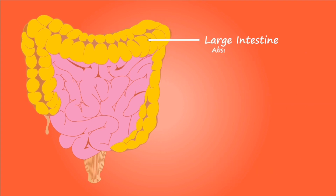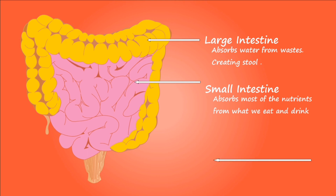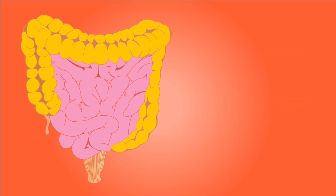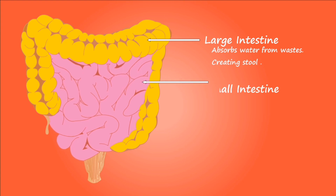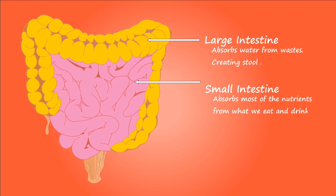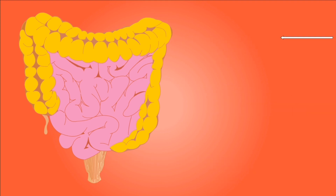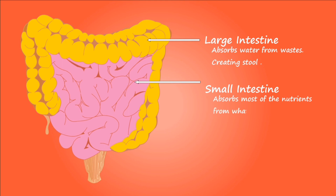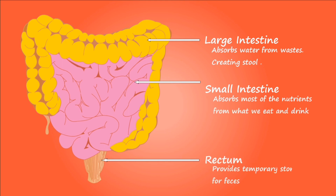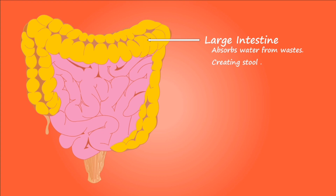The mucosa has a large number of goblet cells but does not have any villi. The longitudinal muscle layer, although present, is incomplete. The longitudinal muscle is limited to three distinct bands called teniae coli, that run the entire length of the colon. Contraction of the teniae coli exerts pressure on the wall and creates a series of pouches called haustra along the colon. Epiploic appendages, pieces of fat-filled connective tissue, are attached to the outer surface of the colon.